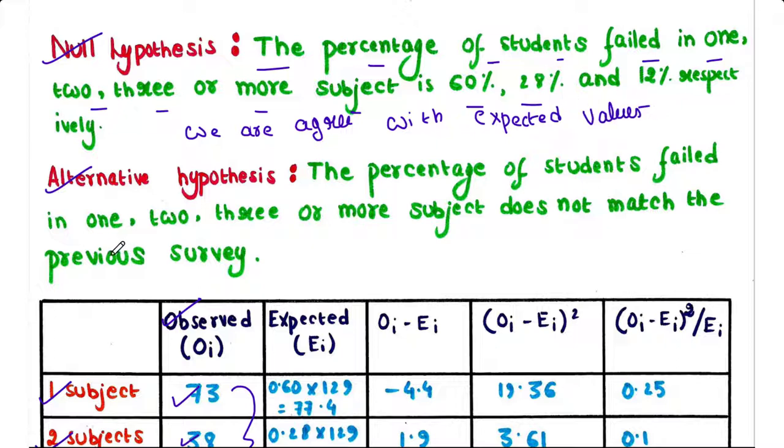Alternative hypothesis: The percentage of students failed in 1, 2, 3 or more subjects does not match the previous survey. That means there must be some differences between expected and observed values.